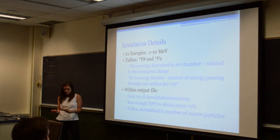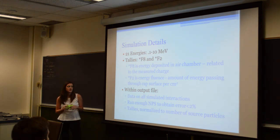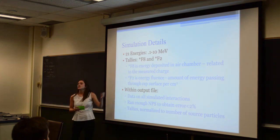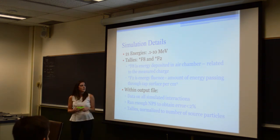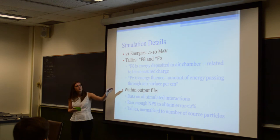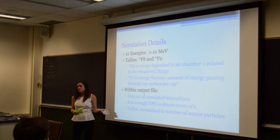We ran 21 different simulations for energies ranging from 0.1 to 10 MeV. We have our data from two main sources, which are these tallies. The F8 tally is the energy deposited in the air chamber. The star F2 tally is the amount of energy passing through the surface of the cap per centimeter squared. The software normalizes it so that it's energy deposited in the air chamber per particle. We also needed air mass and the number of particles running the simulation, which are given in the output file along with the tallies.